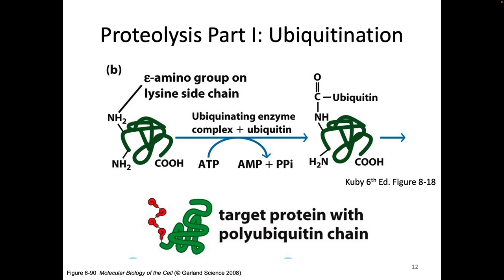Sometimes normal cell proteins get ubiquitins added to them because they're misfolded or have some kind of problem and the cell needs to get rid of them. Sometimes cells get ubiquitins added just at a general background rate — we just replace a lot of our proteins every so often, even if there's not necessarily anything wrong with them. It's kind of like your iPhone — sometimes you just get a new one even if there wasn't really anything wrong with the other one.